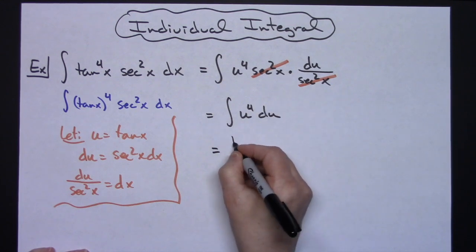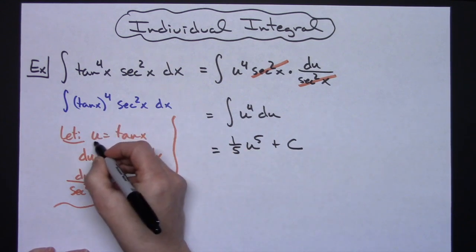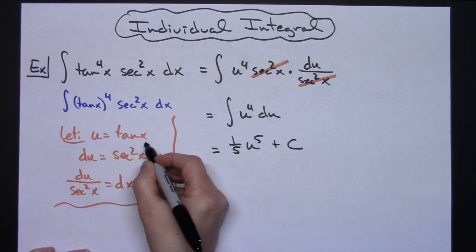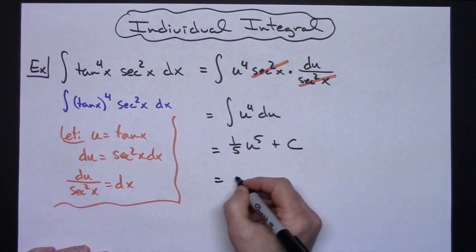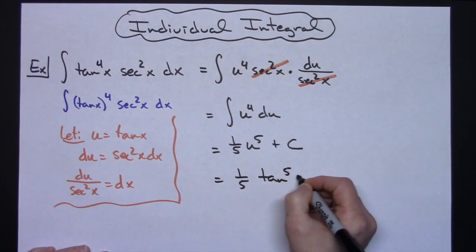We're just going to add one, and we'll have 1/5 u^5 + C. And then replacing that u with what I originally said it was, which is tangent, we'll have 1/5 tan^5(x) + C.